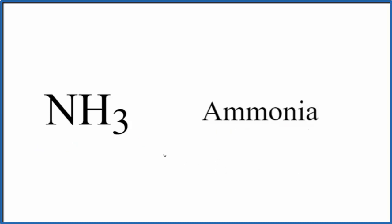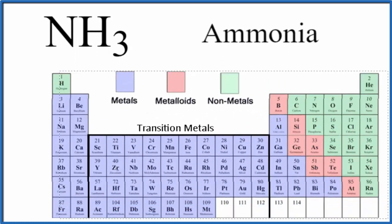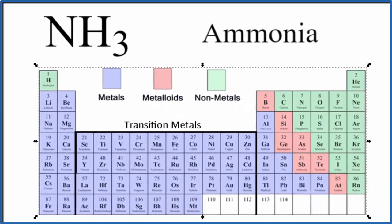First off we need to know what type of elements we have bonded together. We look at the periodic table divided up into metals, metalloids, and nonmetals.